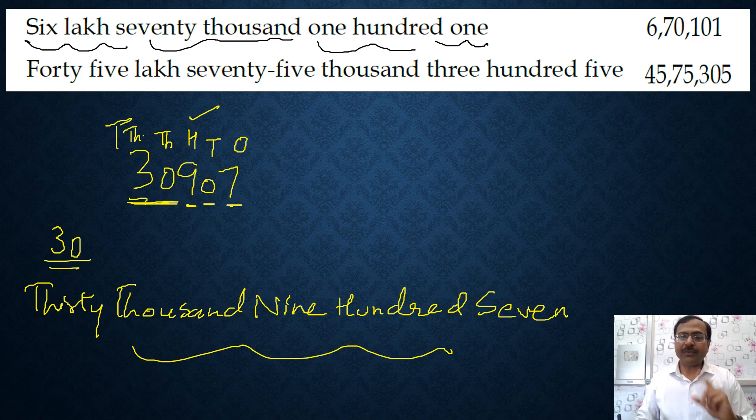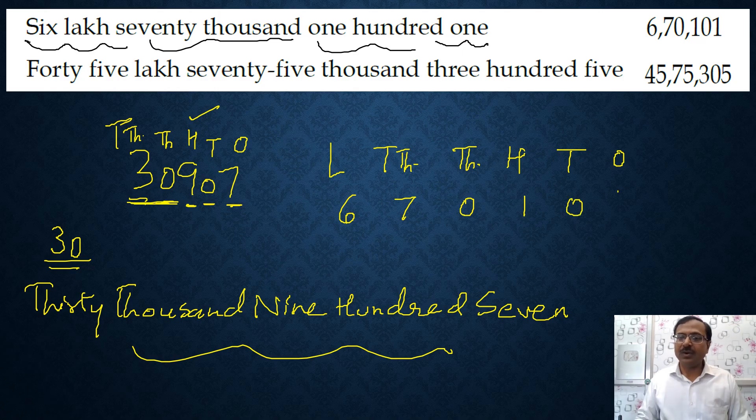Now six lakh seventy thousand one hundred one. If you write the placement boxes then look at the number of digits we will have: 101. So ones, tens, hundreds, six lakh. It starts with six lakh seventy thousand. Six lakh, six digits. So we will write up to thousand, ten thousand, and lakhs.